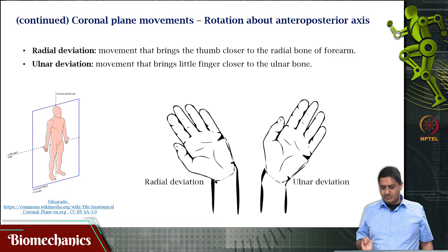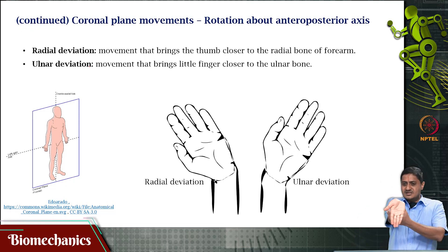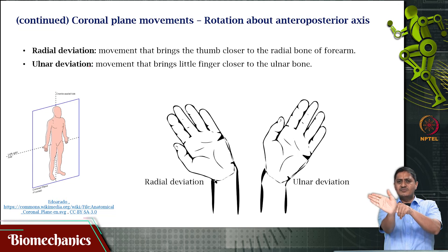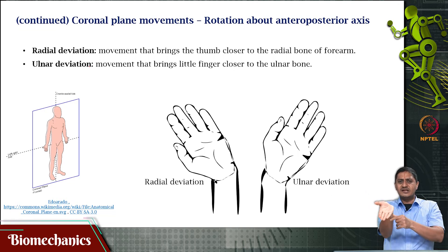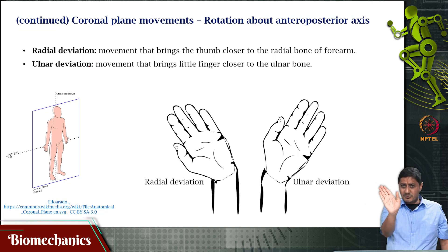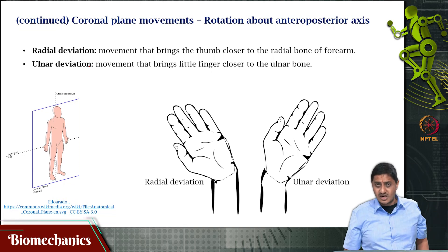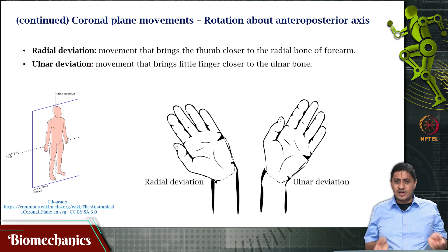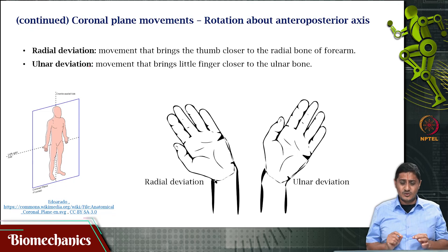Then I can also make this movement — at the wrist I can make that movement versus this movement. Because this movement is taking the segment away from the midline, I could call this abduction and this adduction. But again, that is not how they are called. Like I said, in biology, exception is the rule.